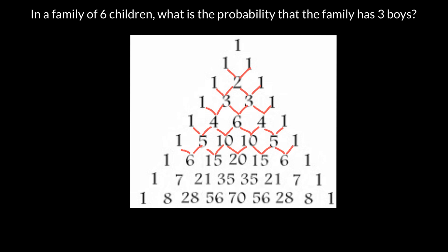Another thing you have to know about Pascal's Triangle is that the first row on the top is not row number one. This row is actually row number zero. Row number one would be the next row. So this is row two, three, four, five, six, seven, and row number eight.